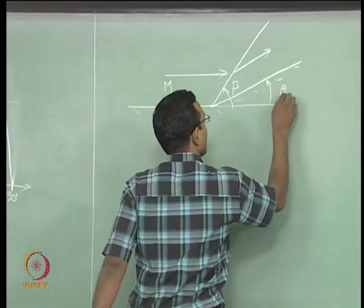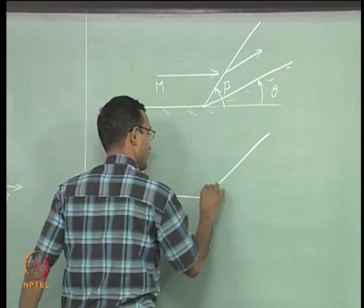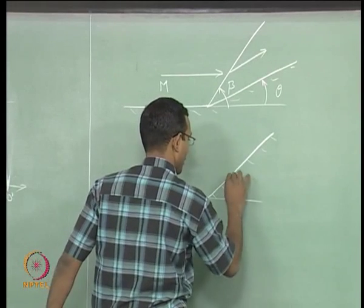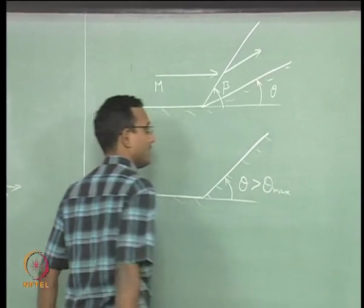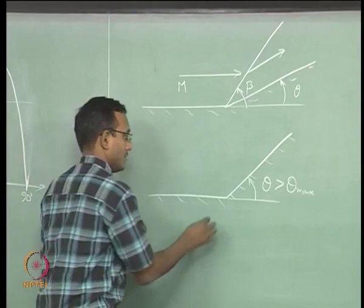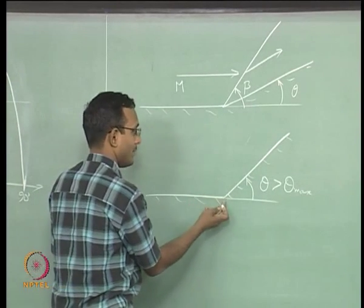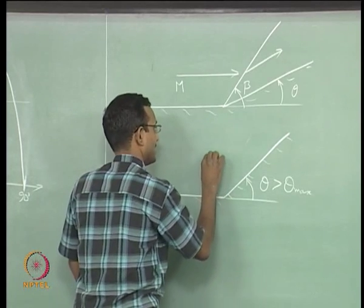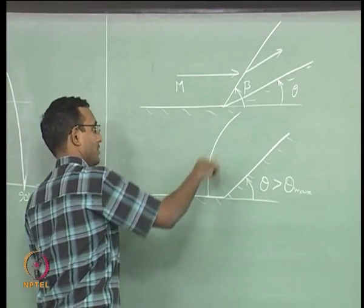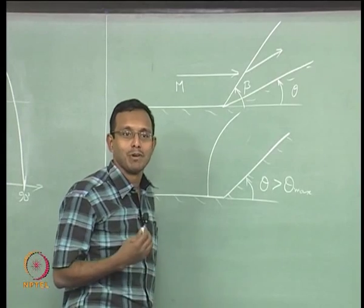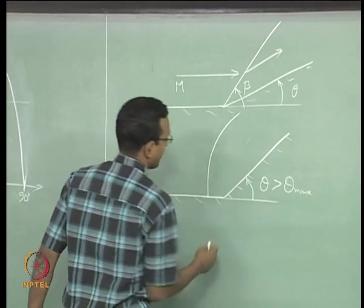If the deflection angle for the wall is theta greater than theta_max, then the shock will not be along a line starting from the corner — it will be detached from the corner. It will be close to a normal shock at the bottom, and as it goes out it will turn into a bow shock. We saw an example of a bow shock in one of the videos about two classes back.